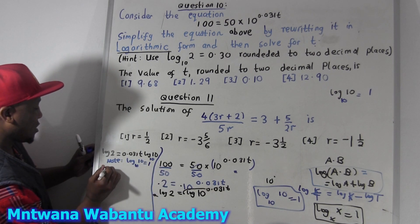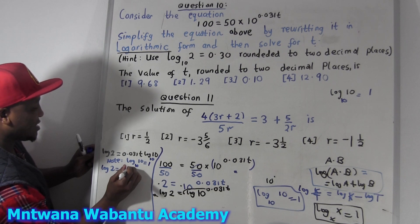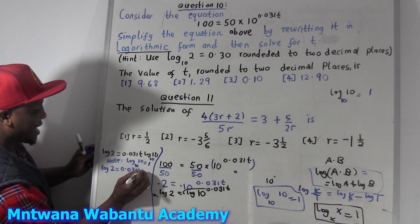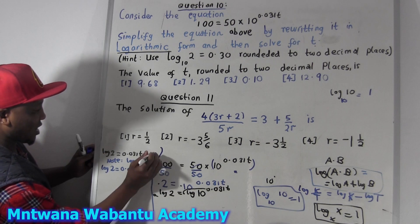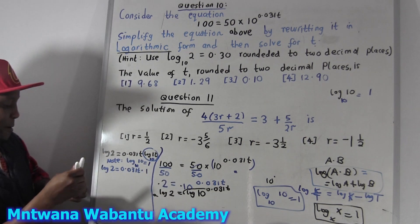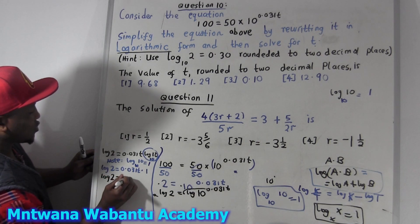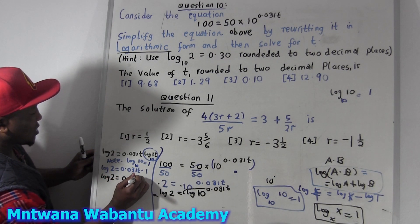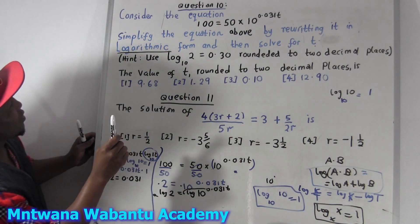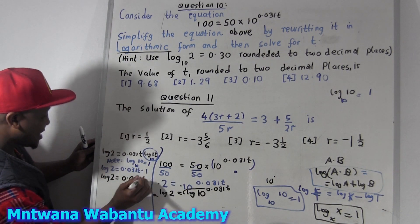So now this becomes: log 2 equals 0.031T times 1. So log 2 equals 0.031T.